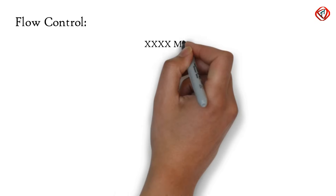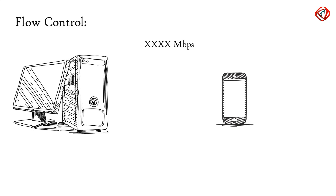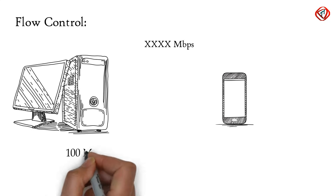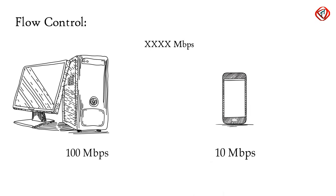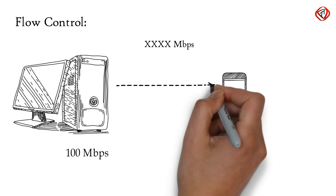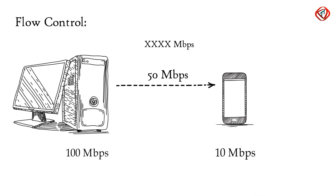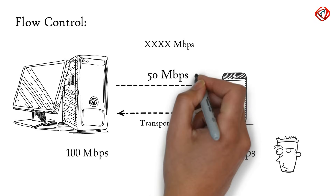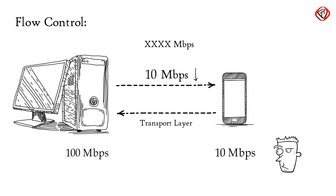In flow control, the transport layer controls the amount of data being transmitted. Consider our mobile is connected to a server. Suppose the server can transmit data at a maximum of 100 Mbps and our mobile can process data at a maximum of 10 Mbps. Now we are downloading a file from the server, but the server starts sending data at 50 Mbps, which is greater than the rate our mobile can process. So the mobile phone, with the help of the transport layer, can tell the server to slow down the data transmission rate to 10 Mbps so that no data gets lost.